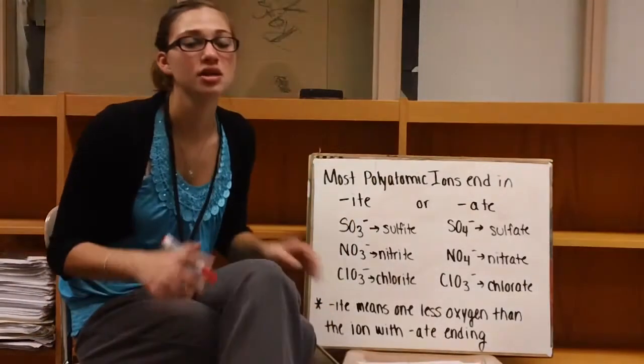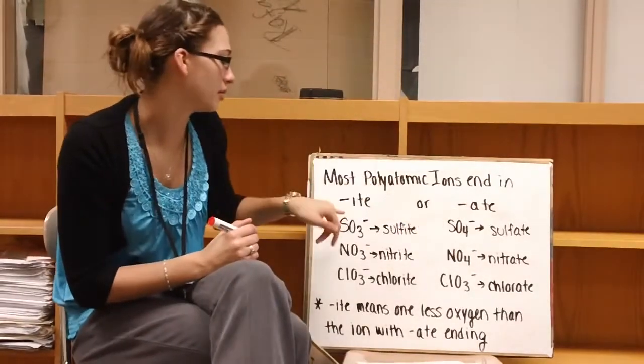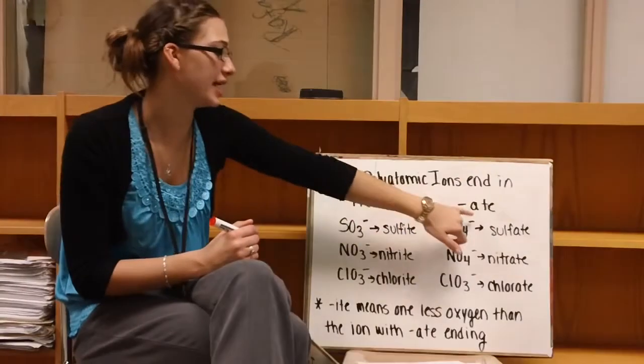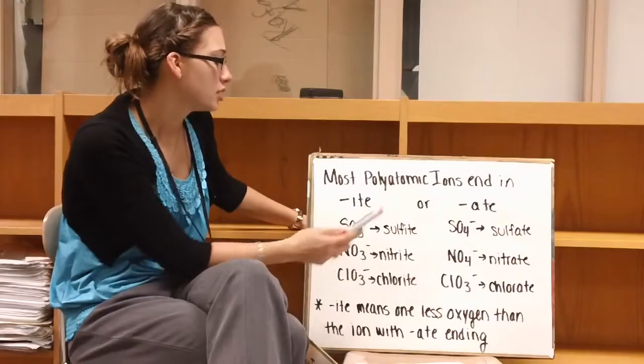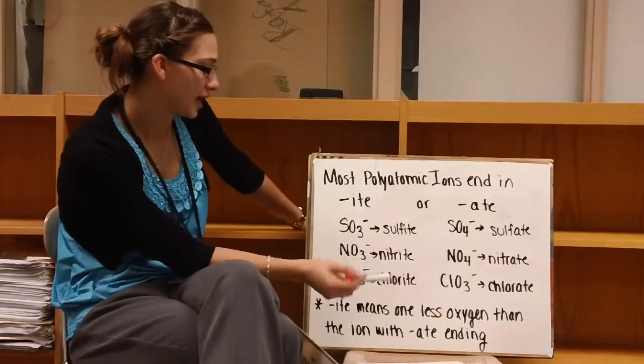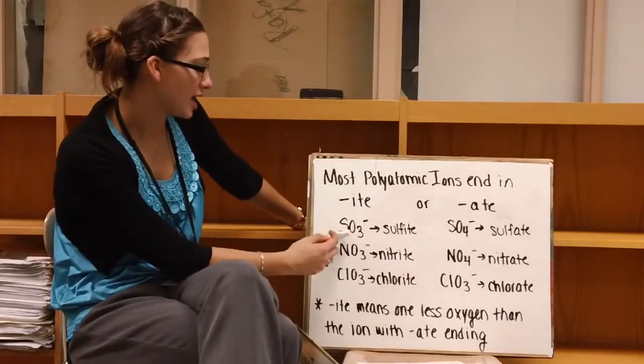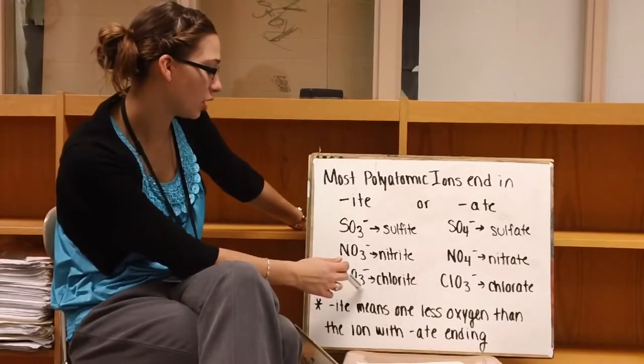Alright, so most polyatomic ions end in either -ite or -ate, so I-T-E or A-T-E. So these are some of the examples that end in -ite. So we have sulfite, we have nitrite, we have chlorite. If we look, it's SO3-, NO2-, ClO2-.